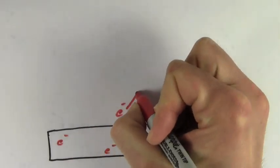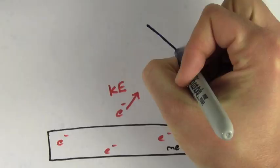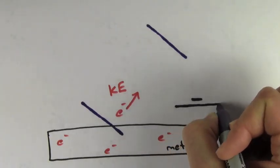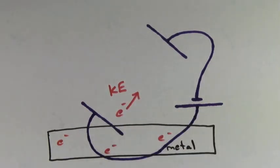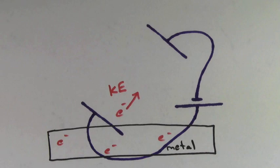One way to measure how much kinetic energy an electron has is by figuring out how much voltage it takes to stop that electron. Say there are two metal plates and you hook them up to a battery of voltage V.